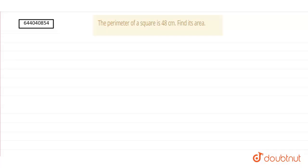with a question of perimeter and area which says the perimeter of a square is 48 centimeter and we have to find its area. So for solving this question, as